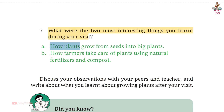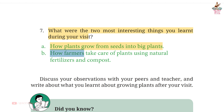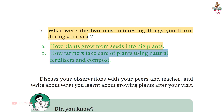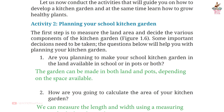Page 11, Question 7: What were the two most interesting things you learned during your visit? Answer: (a) How plants grow from seeds into big plants; (b) how farmers take care of plants using natural fertilizers and compost.